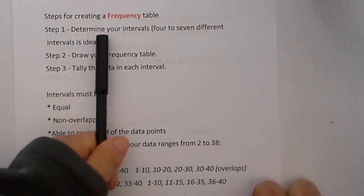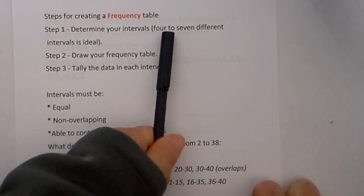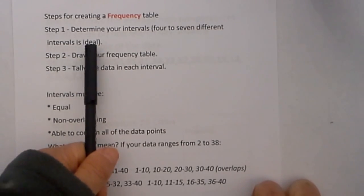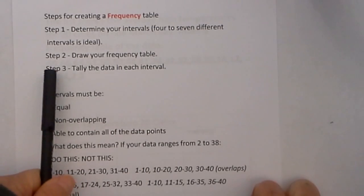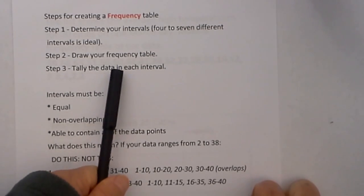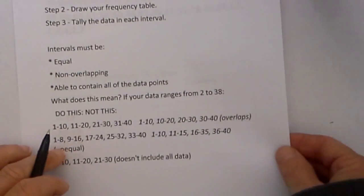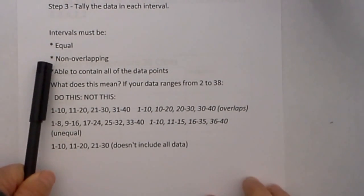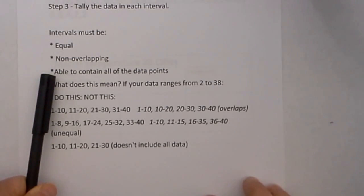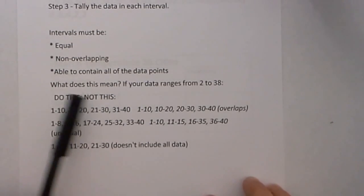Step 1 is determine your intervals. Four to seven different intervals is ideal. Step 2, draw your frequency table. Step 3, tally the data in each interval. A word or two about your intervals. The intervals need to be equal, non-overlapping, and able to contain all the data points.